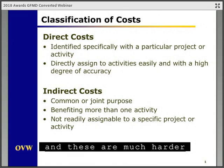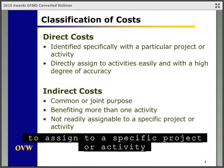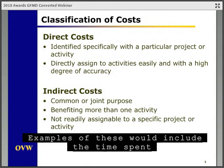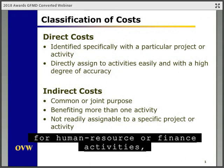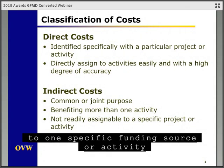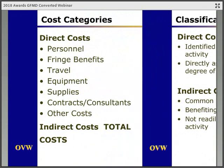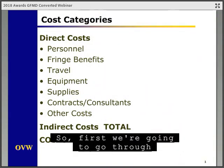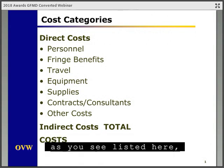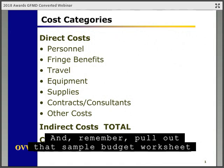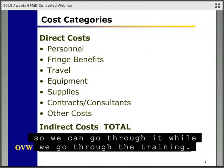Direct costs include your staff who work directly on the grant and their percentage of time for the project, their related fringe costs, travel costs, program supplies, your partner's costs, and anything else directly related to the project. On the other hand, indirect costs are much harder to assign to a specific project or activity and benefit common purposes or more than one activity for your organization. Examples include time spent for human resource or finance activities for staff who cannot directly track their time to one specific funding source.